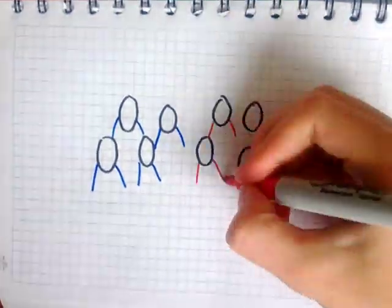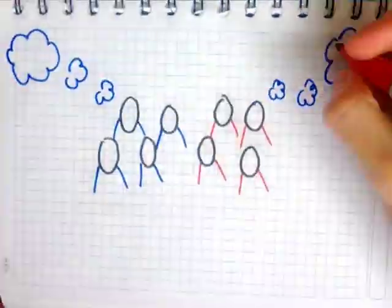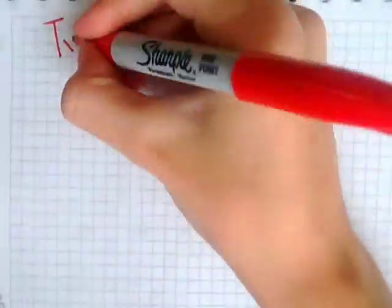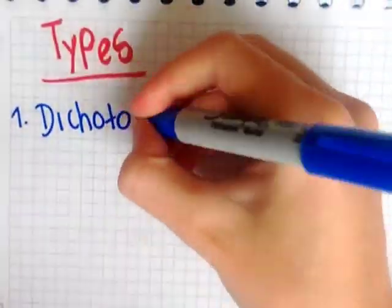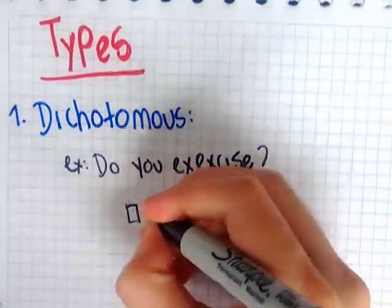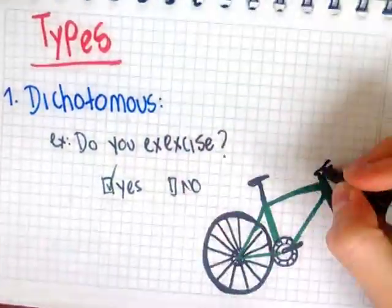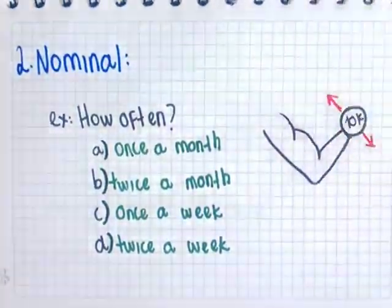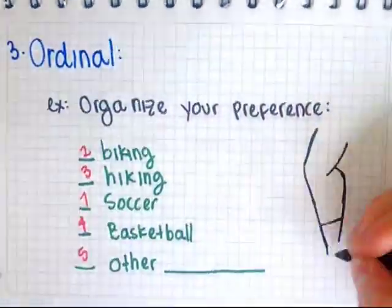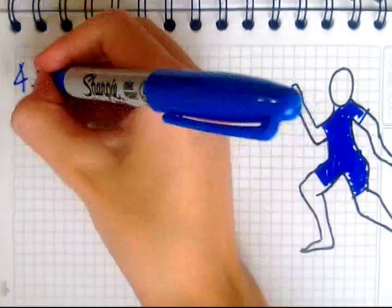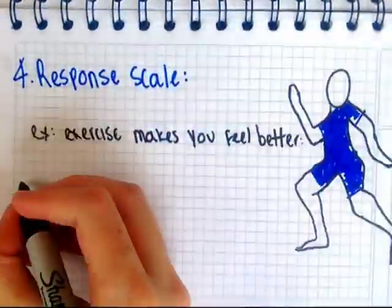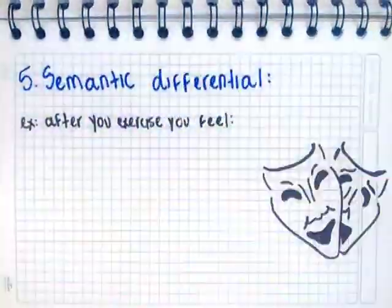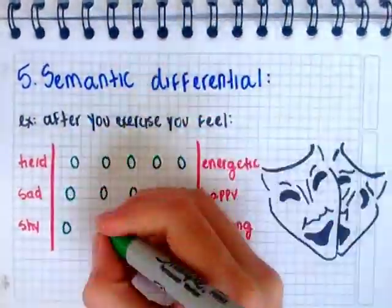It is a great instrument to measure common appreciations around any topic, and it has become increasingly popular. There are various types of questions: dichotomous, with two possible answers; nominal, with various options to choose from; ordinal, organizing items according to preference; response scale, measuring levels of frequency or agreement; and semantic differential, using opposite appreciations.